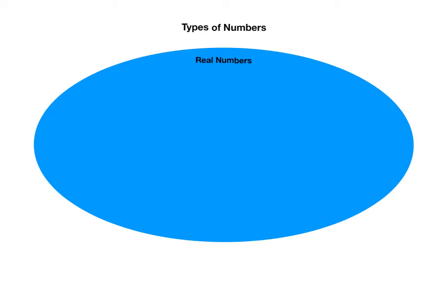Recall there are five different types of numbers you should know: whole numbers, integers, rational numbers, irrational numbers, and real numbers. We looked at examples of those and defined each in a previous screencast. Now we want to look at a Venn diagram to understand the relationship between these five different types.